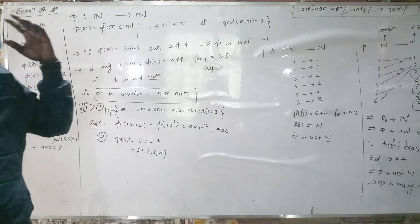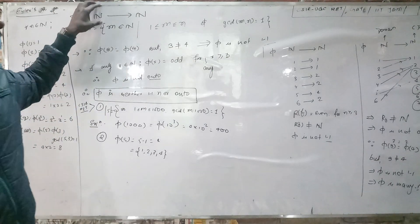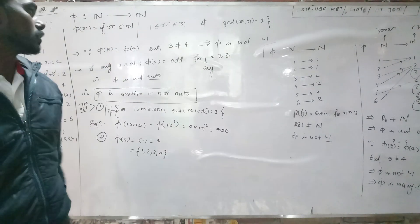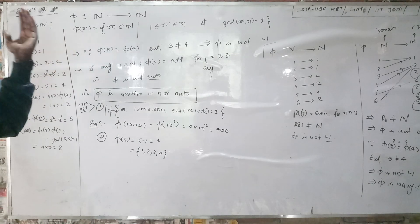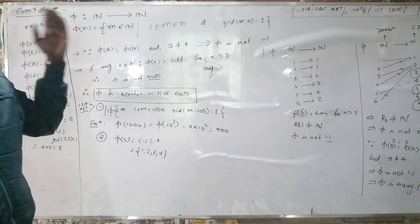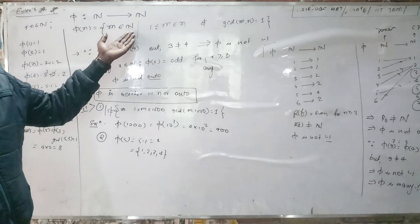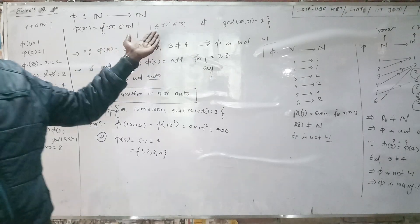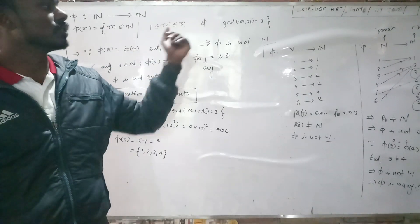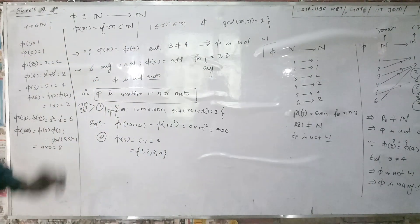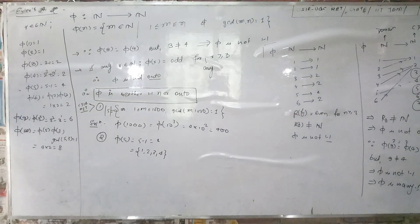Phi of n is defined as the collection of all elements from the set of natural numbers lying between 1 and n having gcd 1. That means both should be coprime. For example, phi(1) equals 1 because there is a single element 1, and its gcd with 1 is 1. Phi(2) equals 1 because...